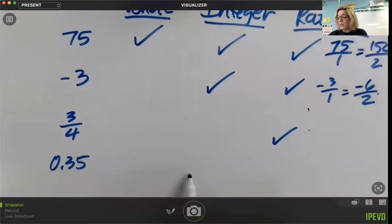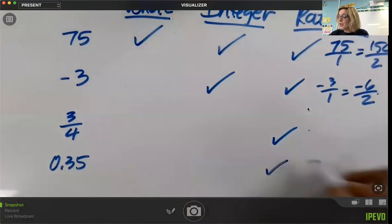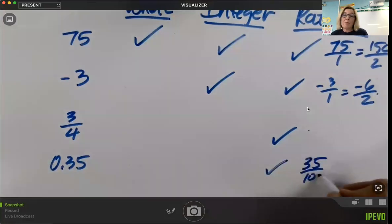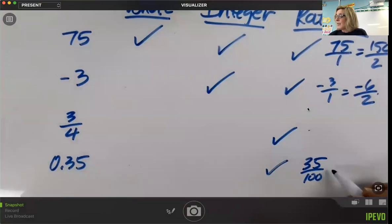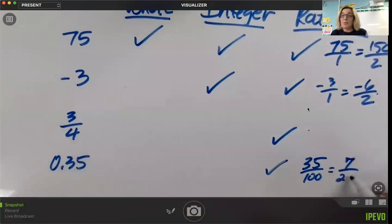But it is a rational number because thirty-five hundredths could be written as a fraction of thirty-five hundredths. Now we could also simplify that. Thirty-five and one hundred have a common factor of five. So we could divide both the numerator and denominator by five and get seven-twentieths, which is equivalent to this decimal number of thirty-five hundredths.